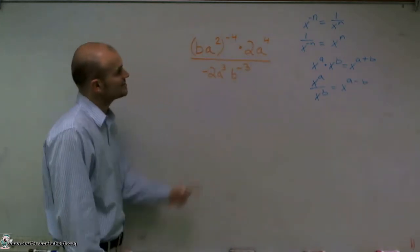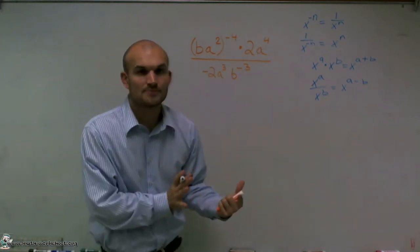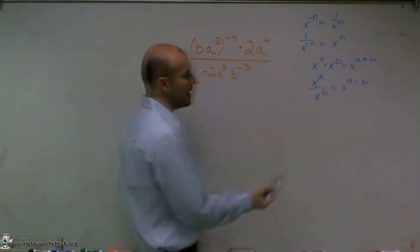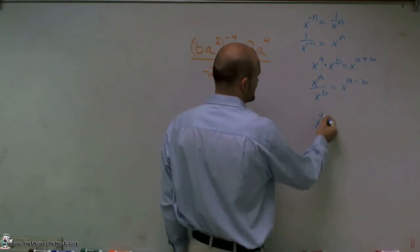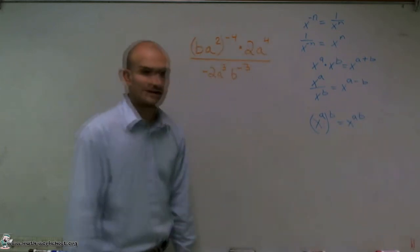And then the last thing I notice is I do have some parentheses in here. And so I have an exponent raised to another power. So the power rule tells us if I have a variable x to the a raised to the b power, that's simply going to mean x to the a multiplied times b.